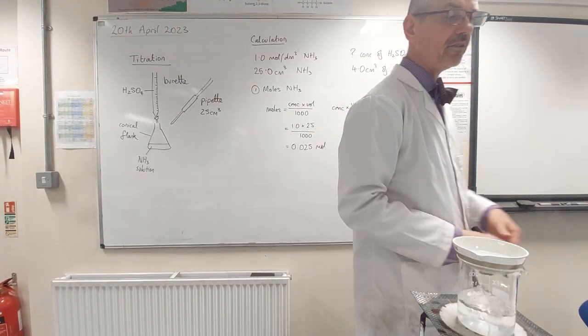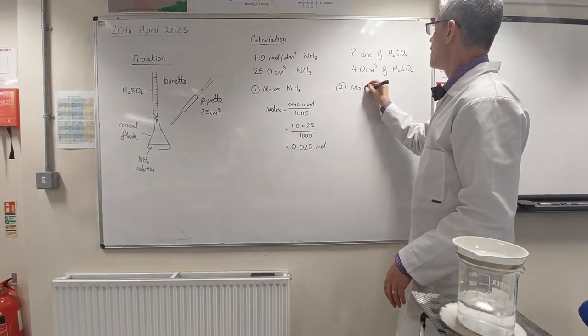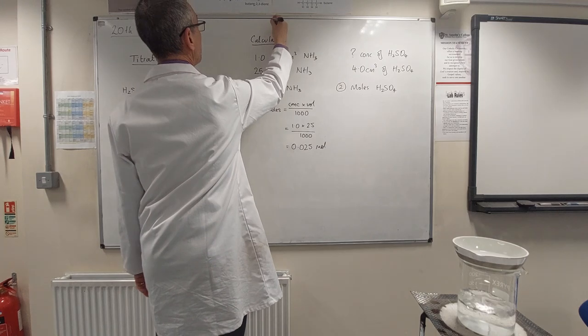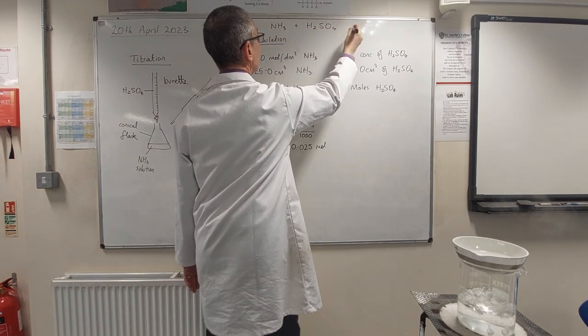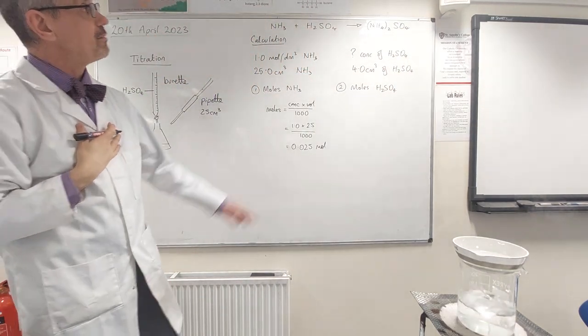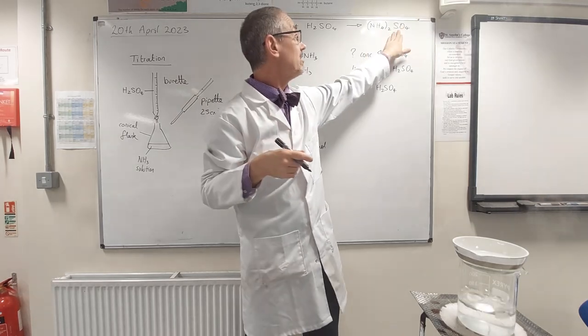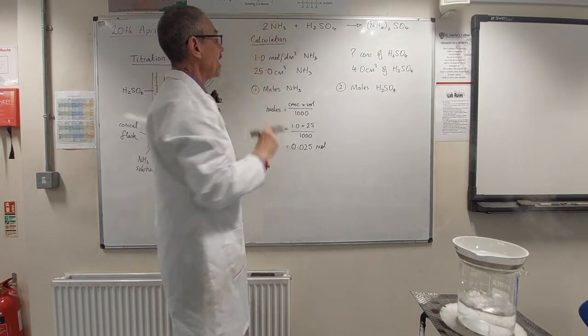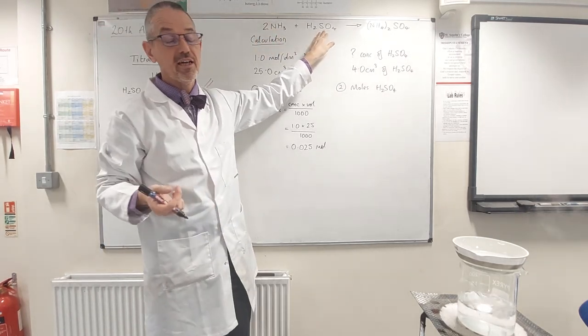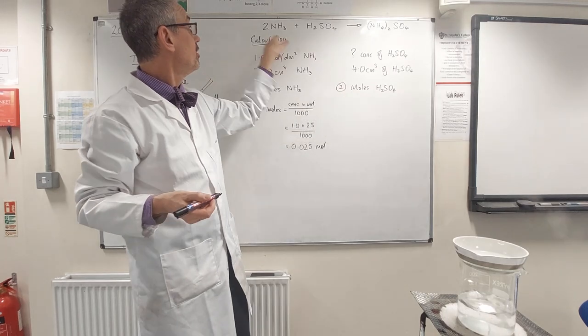So the next step is to think about how much sulfuric acid we've got. Well, in order to work that out, I need a balanced symbol equation. So let's write that. I'll stick it at the top here. So ammonia NH3 reacts with H2SO4 to make ammonium sulfate. Okay, well, the ammonium ion has a 1 plus charge and sulfate ion has a 2 minus charge. So I need two ammoniums in brackets to cancel the charge of 1 sulfate. And that means that I need to balance the equation with a 2 in front of the NH3. Now that's crucial to our calculation because it tells us that 2 moles of ammonia is needed to react with 1 mole of sulfuric acid. So that we have to use that 2 to 1 ratio when calculating the moles of H2SO4. 2 of that reacts with 1 of that.